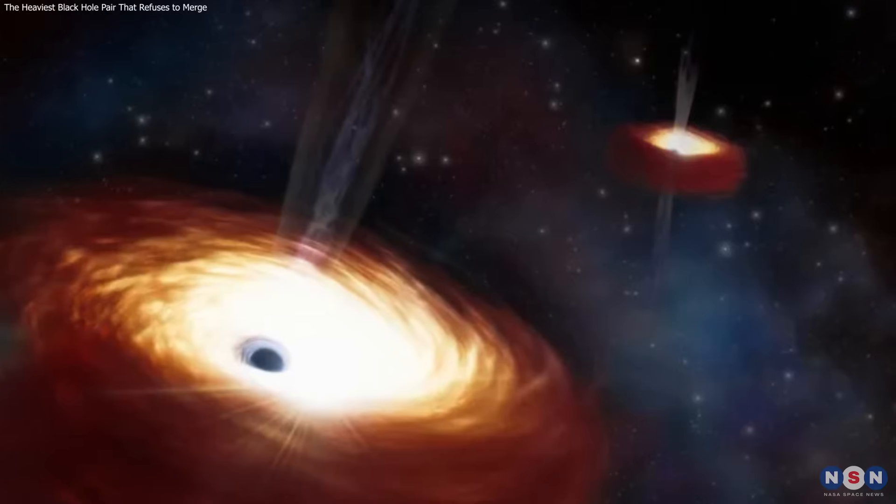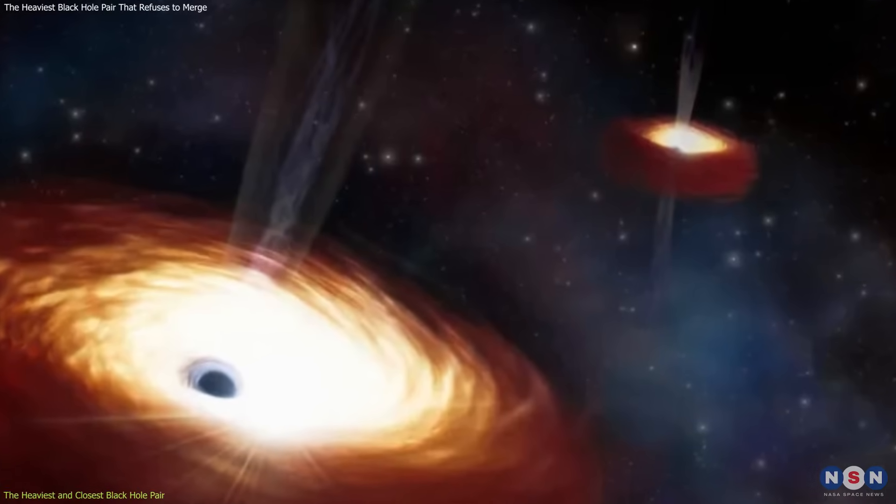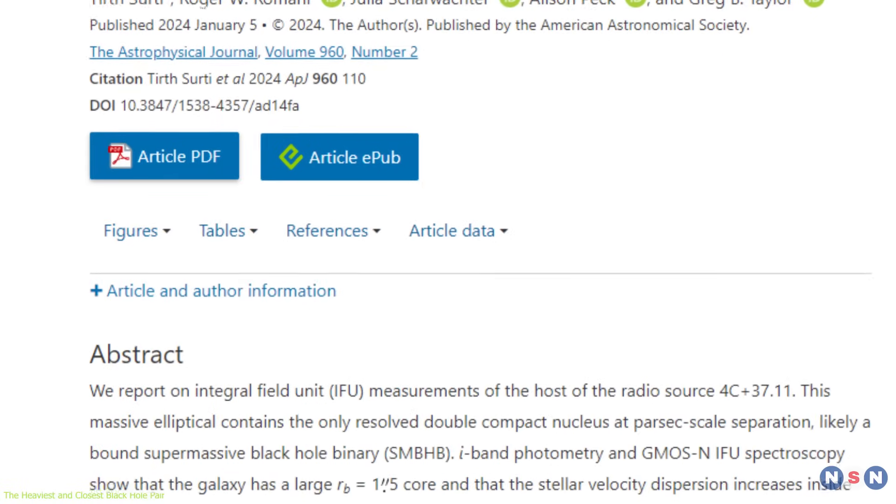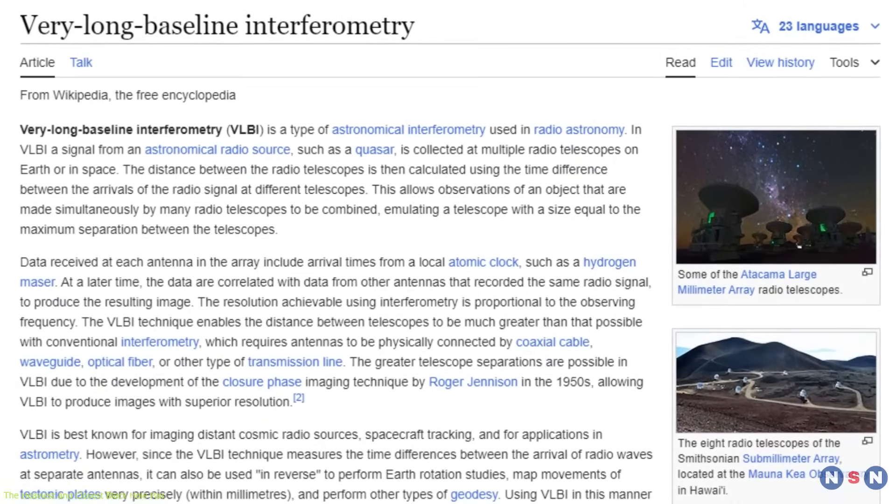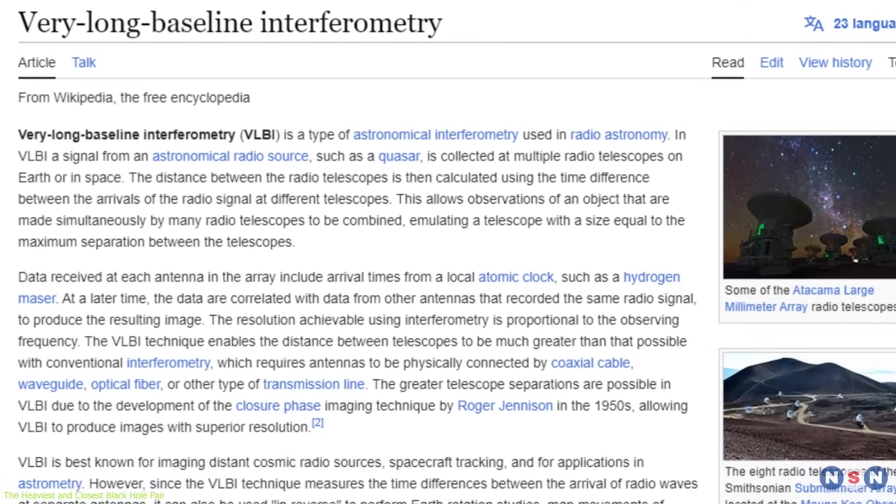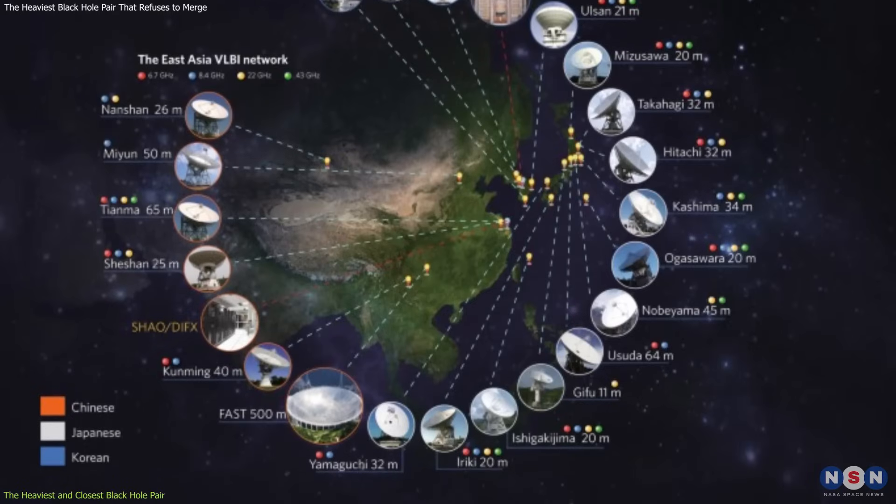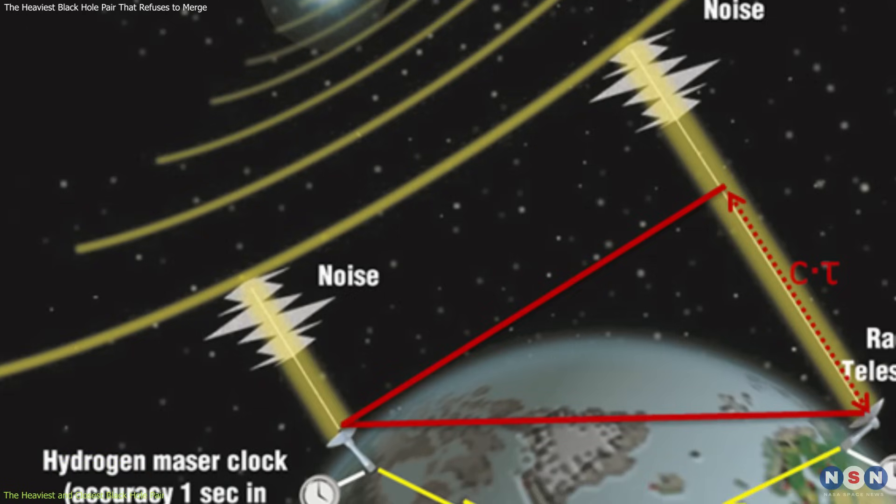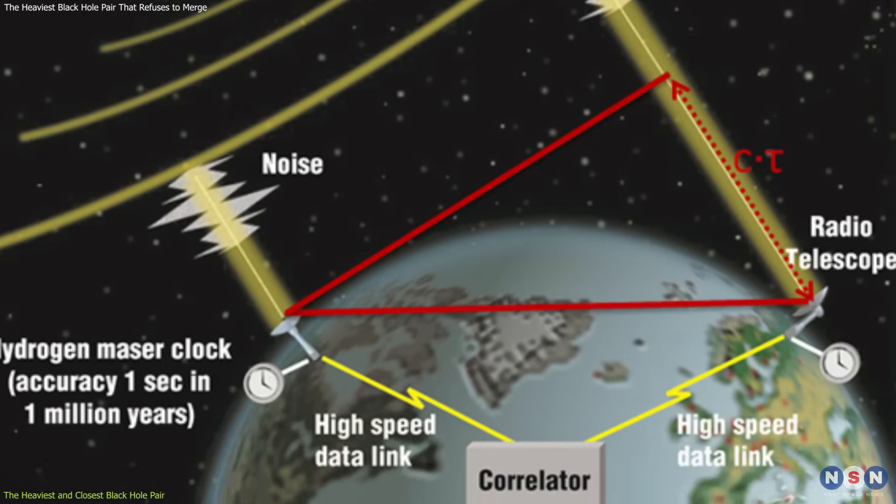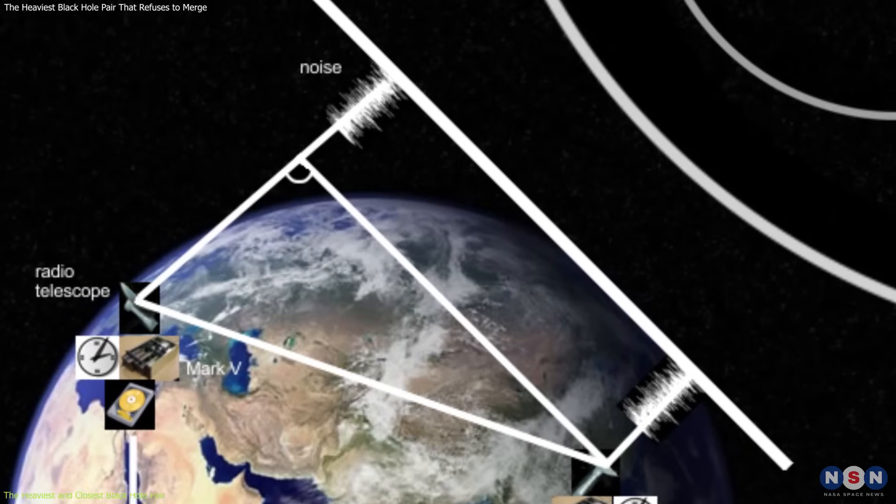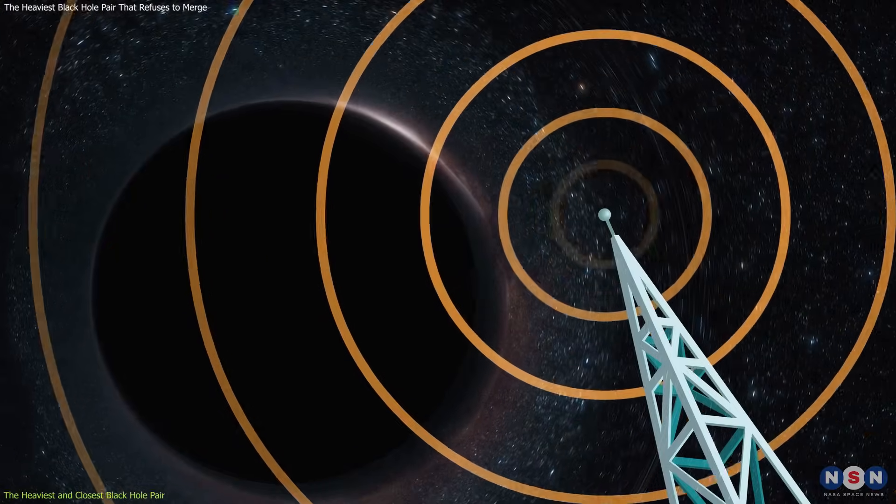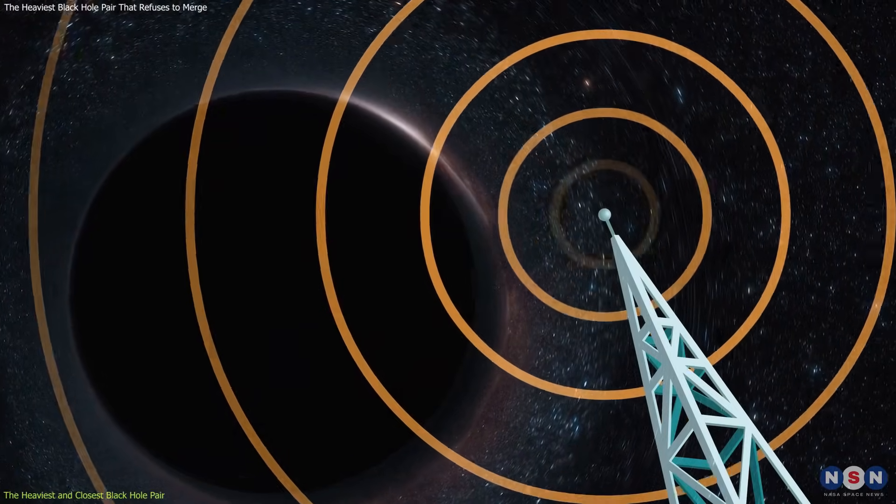The first thing we need to know about this black hole pair is how they were discovered and measured. The astronomers used a technique called Very Long Baseline Interferometry, or VLBI, which combines signals from multiple radio telescopes across the world to create a virtual telescope as big as Earth. This technique allows them to achieve very high resolution and sensitivity, and to observe radio waves emitted by the black holes and their surroundings.